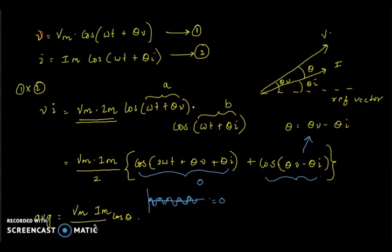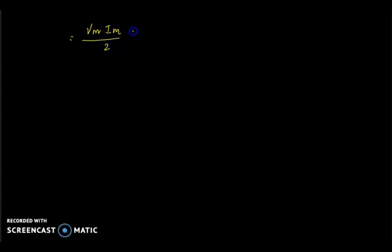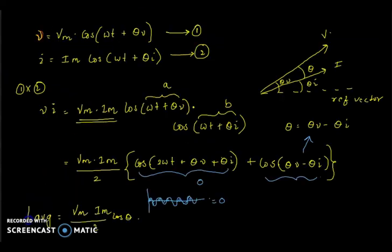The average value is Vm·Im / 2 times cos(θ), where θ = θv − θi. This is the real part of the power. The imaginary part similarly involves Vm·Im / 2 times sin(θ). So this is just like P for real power and Q for reactive power. The total instantaneous power is equal to P plus jQ — here P and Q refer to power, not the Poynting vector.